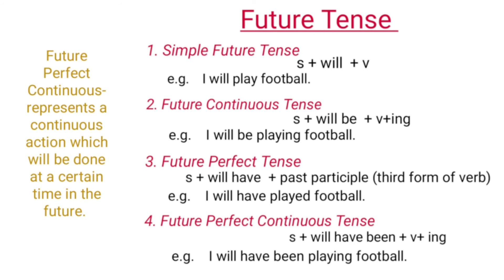Future perfect continuous tense represents a continuous action which will be done at a certain time in the future. It is made up of Subject plus 'will have been' plus verb plus -ing. And example is 'I will have been playing football.'